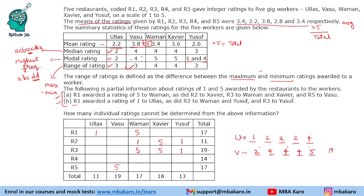We will do likewise for the other 3 candidates. For Vaman, the known ratings are 1, 5, and 5 — so 3 ratings are already known and we need 6 more. The modal rating is 5 and median is 4, so median gives us 4 here. We have 14, 15, and hence we need 2 more.